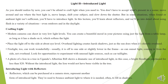Crafting Light. Modern cameras can shoot in very low light levels. You can create a beautiful mood in your pictures using just the light from a table lamp, as long as it has a shade on it which softens the light. Place the light off to the side at about eye level. Overhead lighting creates harsh shadows just as the sun does when it's directly overhead. Fire light too can work wonderfully, usually off to one side or slightly lower in the frame, as can sunset light coming in from the side, not overhead. Look for opportunities to experiment with unusual light sources such as car taillights.